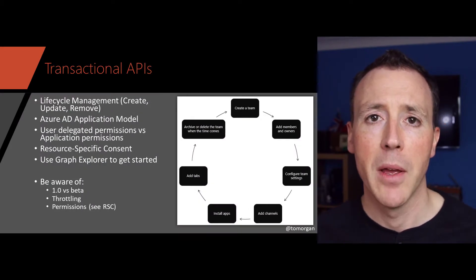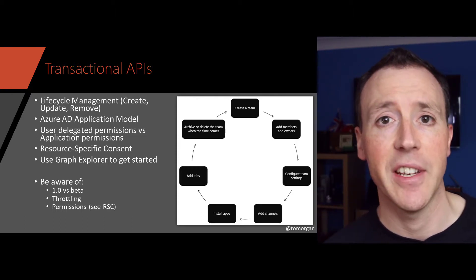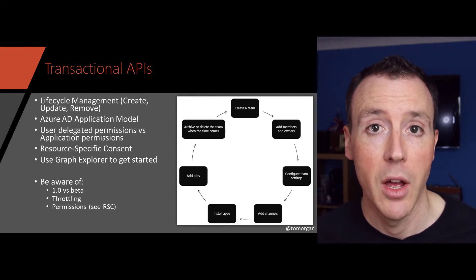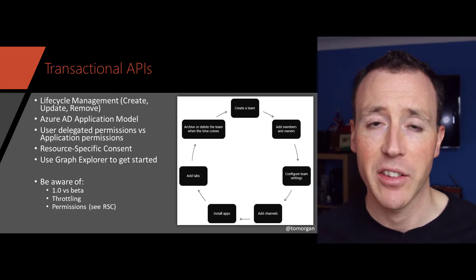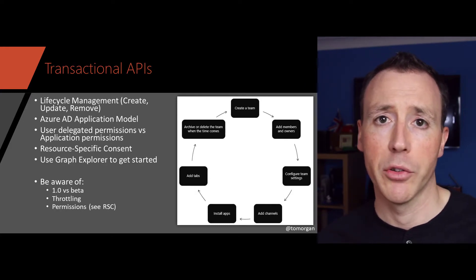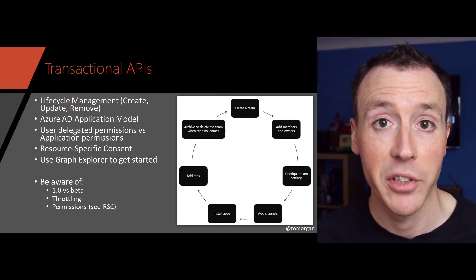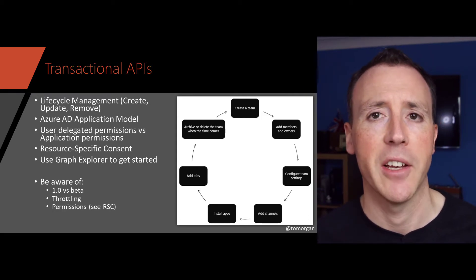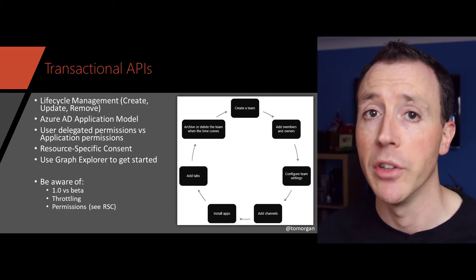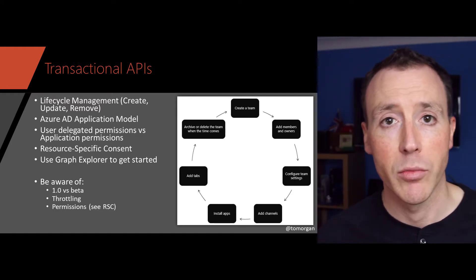That's a pretty big ask for an IT admin. There's a new way of doing this called resource-specific consent that gets around this problem. It allows you, as an application, to request permission just for a very specific resource — a particular team — and that can then be authorized by the team owner, not an IT admin. The application gets the permissions it needs, but only very specifically for that team. It's not supported across all Graph API calls, but where it is supported, it can be a really nice way of tightly scoping your application's permission set while enabling team owners to authorize your application without needing an IT admin.